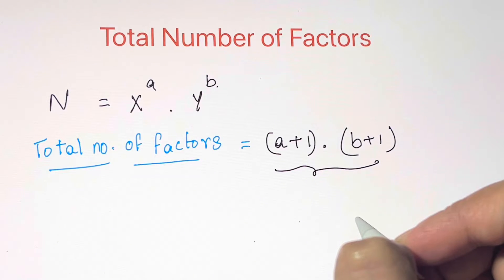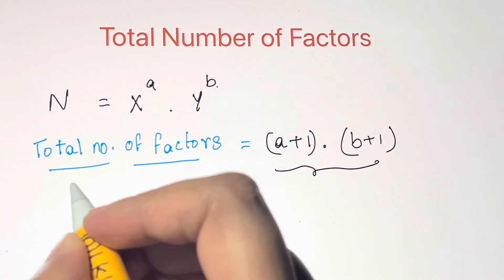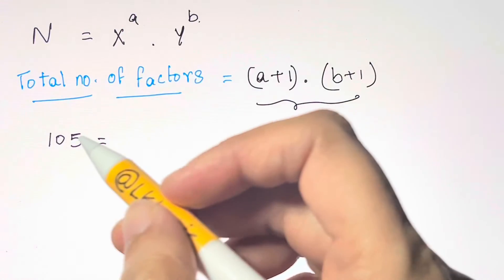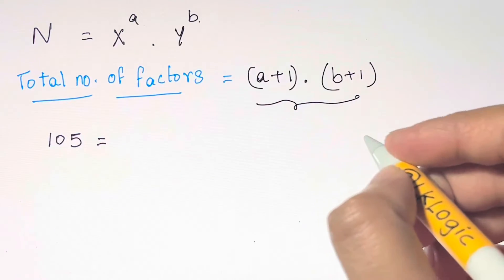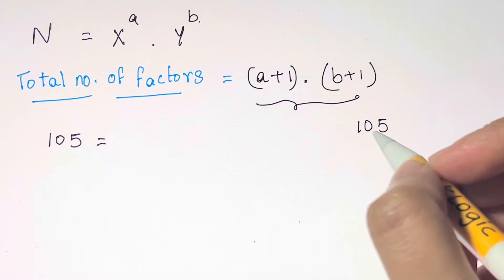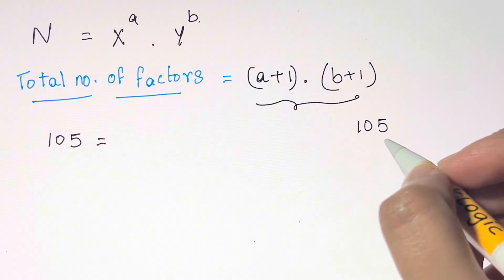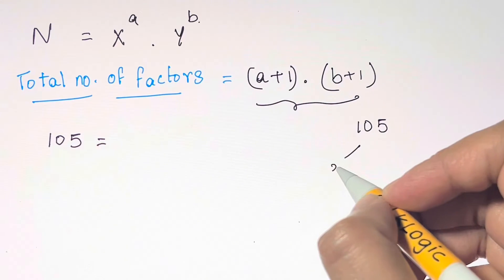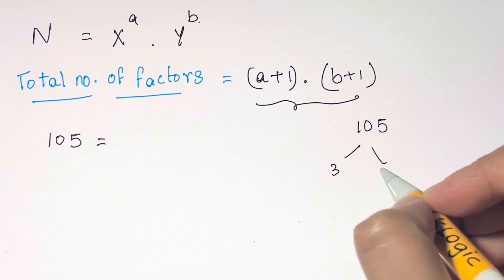Let's take an example. If we have a number 105, we will use a tree method to find the prime factors. So we need to check what pair of numbers multiply to give 105. That can be 3 times 35.